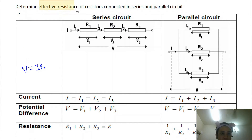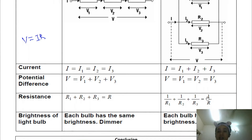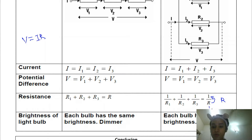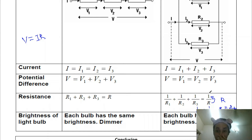For a parallel circuit, to calculate total resistance — also called effective resistance — you use the reciprocal formula: 1/R_total = 1/R1 + 1/R2 + 1/R3. After calculating 1/R, that is not your final answer. You need to flip the fraction to get R. For example, if 1/R = 1/2, then R = 2 ohms. You must flip back to get the actual resistance value.